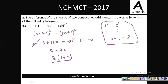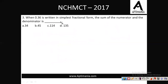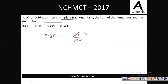Let us move to the third question. 0.36 written in simplest fraction form — find the sum of numerator and denominator. 0.36 can be written as 36/100. Dividing by 4, this simplifies to 9/25. The sum of these two is equal to 34. Very easy question. Option A is the correct answer.